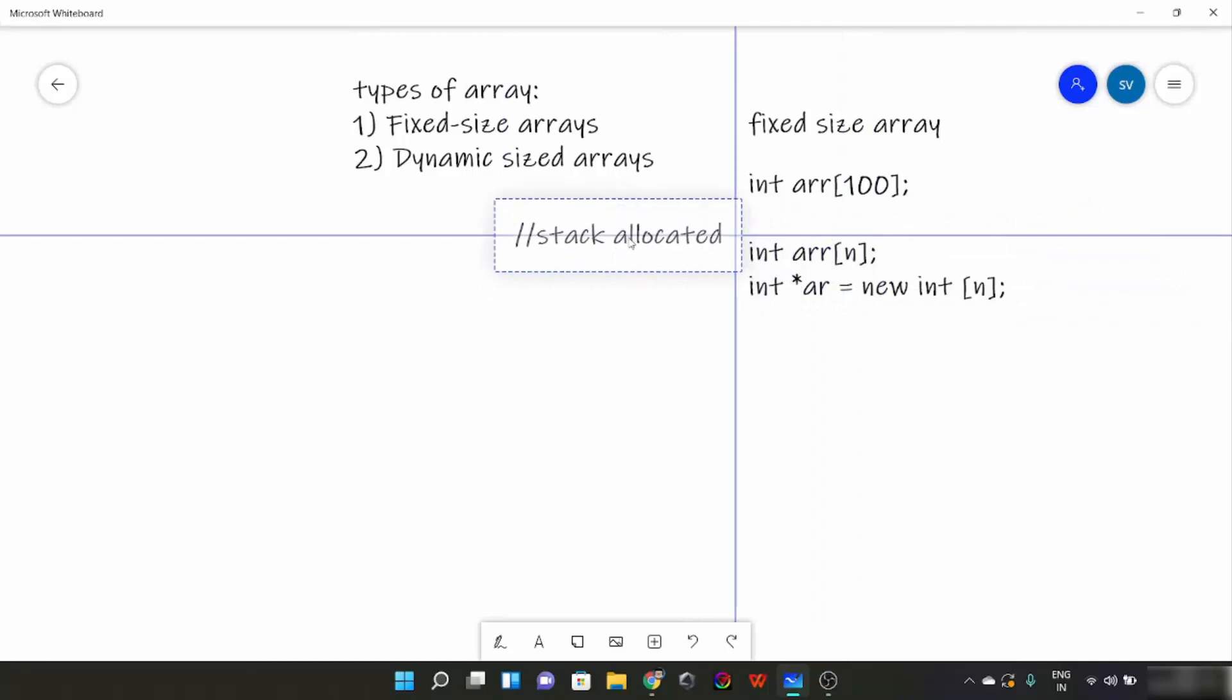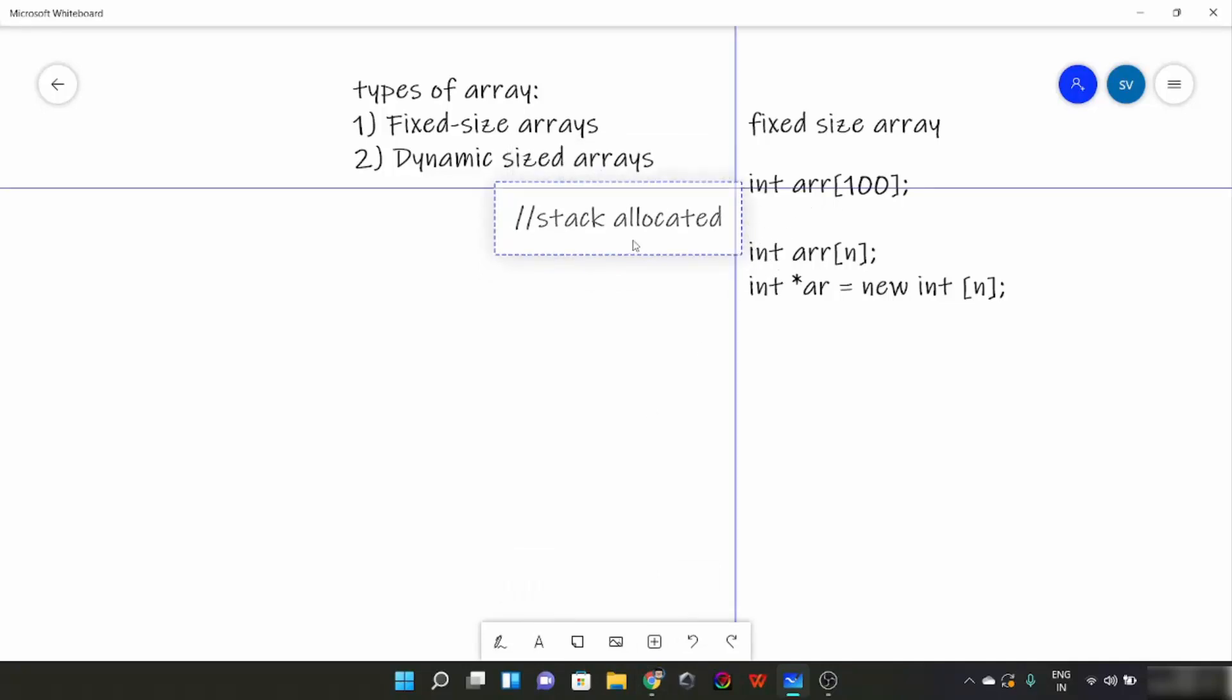Both of these are stack allocated and this is heap allocated. So these are basically the types of how they are stored.